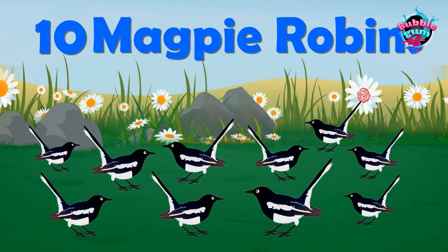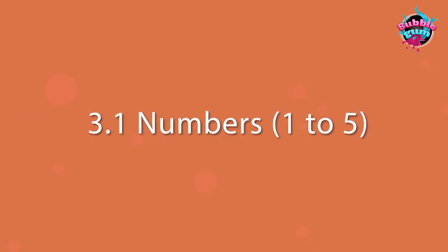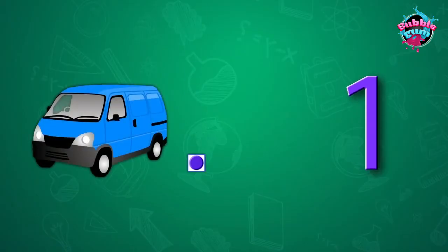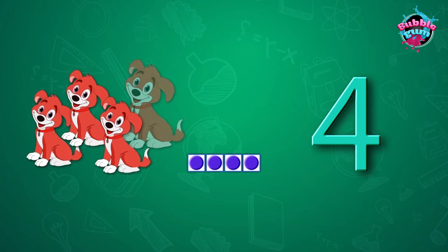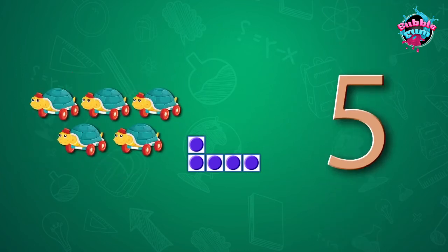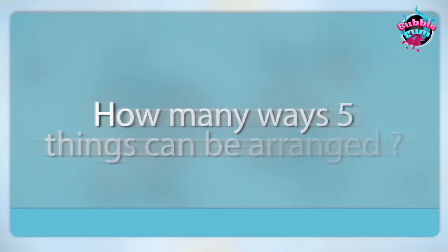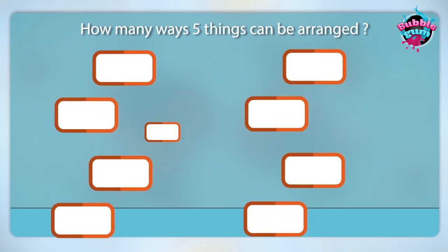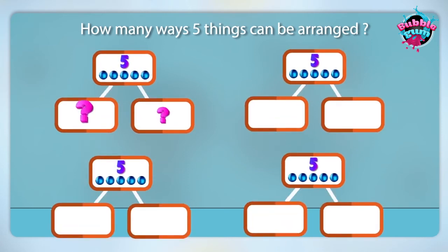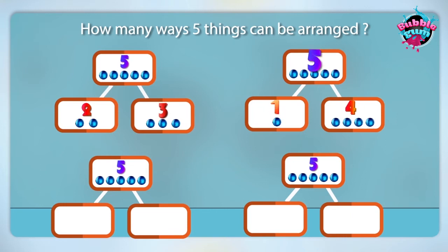One, two, three, four, five. How many ways can five things be arranged? Two and three. One and four. Three and two.